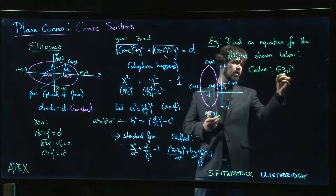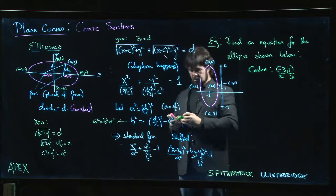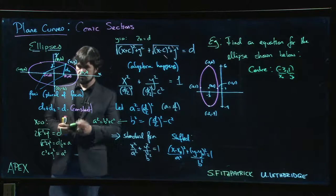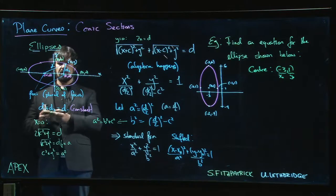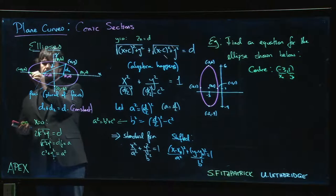Right, so that is x naught, that is y naught. So now we got to figure out what a and b are. So a is this distance from here to here, this whole length from minus a to a, from here to here.